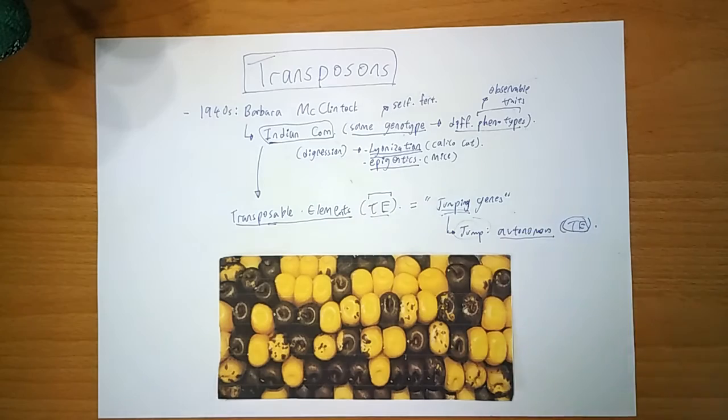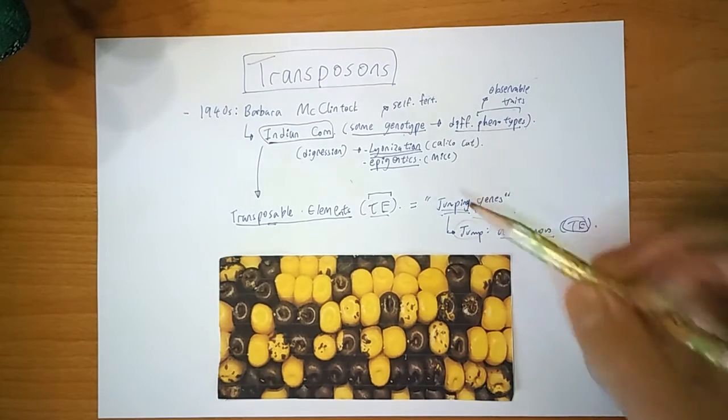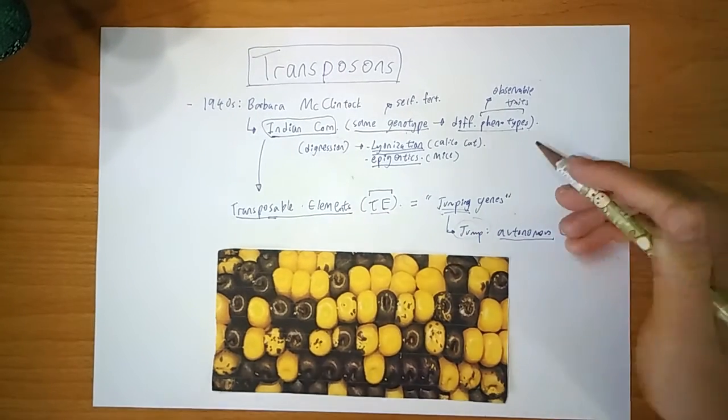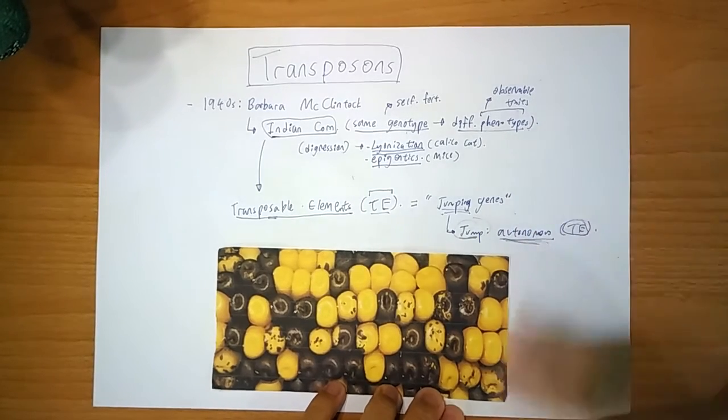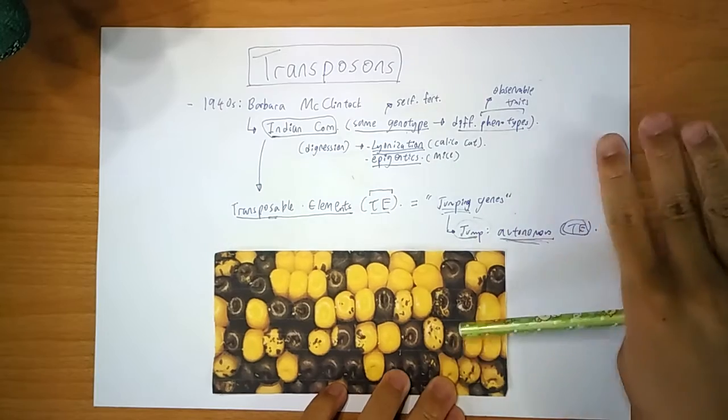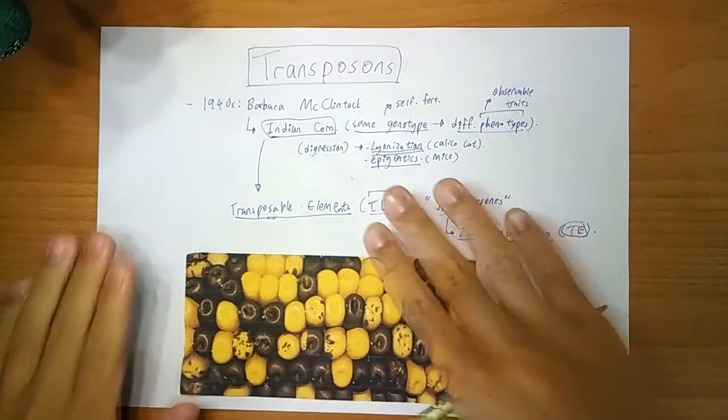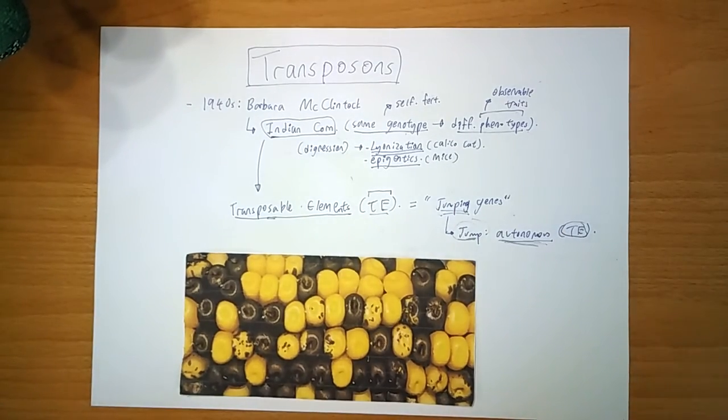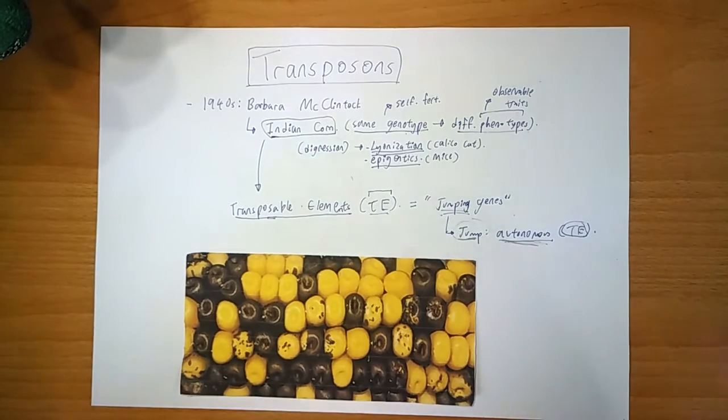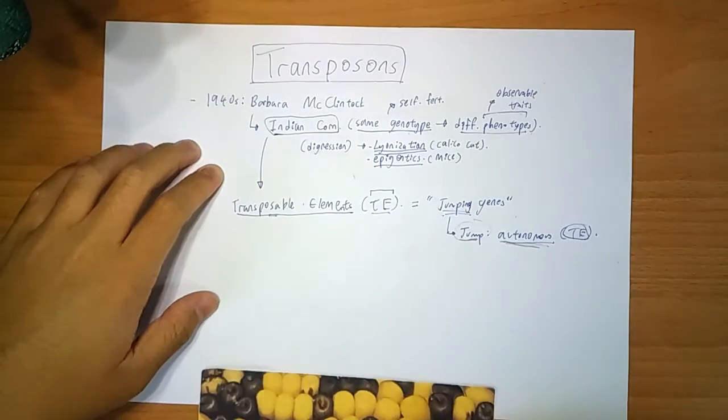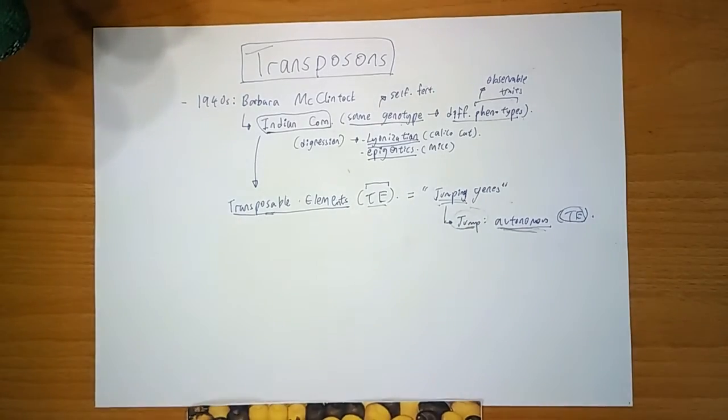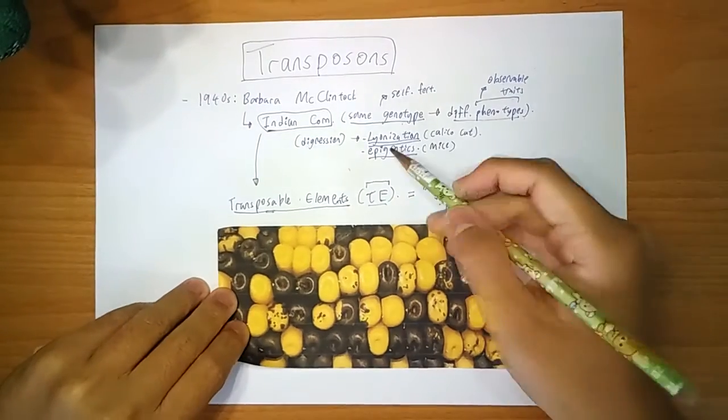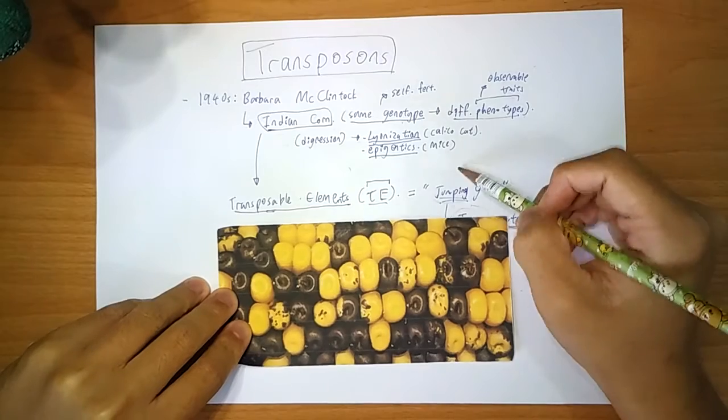And they're also known as jumping genes, but this is not really accurate, just for you to note. Because for them to jump, they have to be autonomous, which is they have to make their own enzymes and stuff to jump. And most of the TEs in our bodies and everywhere else, they are not autonomous. They are broken, and they can't jump. But with the help of the autonomous ones, they can jump. But that will be discussed in the next video. So how do jumping genes explain this?